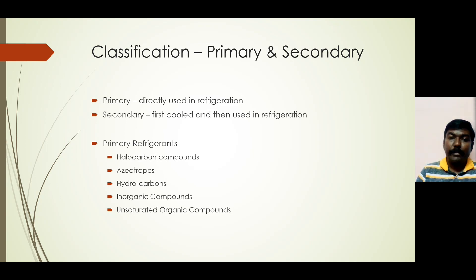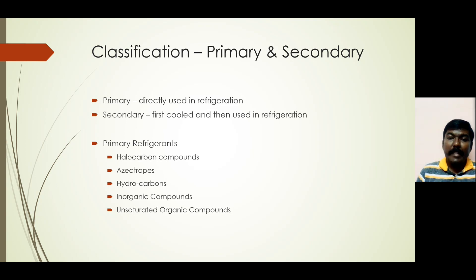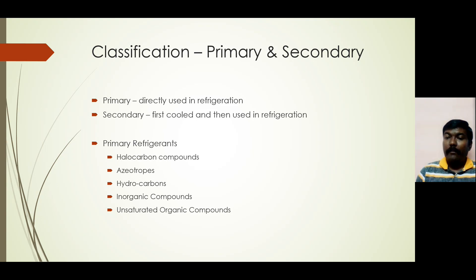To name some primary refrigerants: halocarbon compounds — a mixture of carbon and halogens (chlorine, fluorine, iodine, all these are halogens). Then you have azeotropes, which are a mixture of refrigerants. Then hydrocarbons — a mixture of hydrogen and carbon. Then inorganic compounds where there is no presence of a hydrocarbon. And unsaturated organic compounds — organic compounds where the carbon has a double or a triple bond.